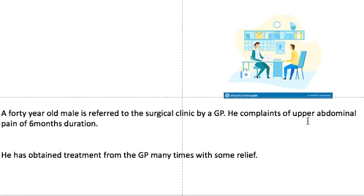To make a diagnosis, we have to find what is the organ at fault and then the pathology. For upper abdominal pain, list what are the possible organs and the pathologies. Since it's six months, we have to think of more chronic problems. Pause the video and make a list of your differential diagnosis.